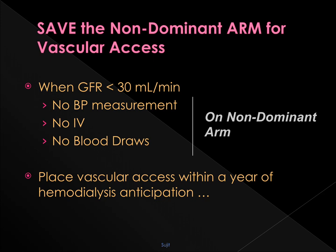An important message which everyone should follow — particularly paramedics — is to save the non-dominant arm for future vascular access creation. Whenever the glomerular filtration rate drops below 30 ml per minute, no BP measurements, no IV lines, and no blood draws should be done from the non-dominant arm, as we create fistulas and grafts in the non-dominant arm and forearm. Vascular access should be created whenever hemodialysis is anticipated within a year.